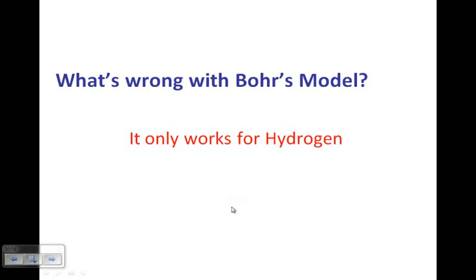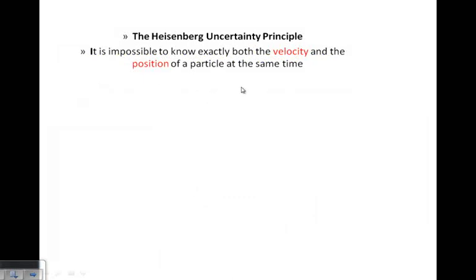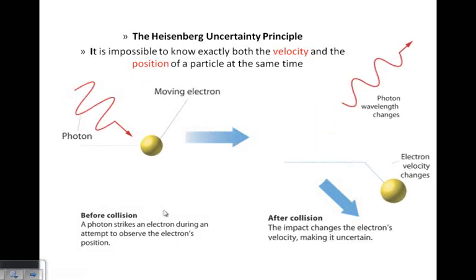Today we believe in something called the quantum mechanical model, also known as the electron cloud model. The people associated with it are Erwin Schrödinger and Werner Heisenberg. Heisenberg is credited with the uncertainty principle. He said you cannot know exactly the location and the speed of an electron, so all you can know is the likelihood of where you would find it - the probability. Schrödinger put together these complex mathematical equations to solve for the likelihood of where electrons would be located. The Heisenberg uncertainty principle says it is impossible to know exactly both the velocity and position of a particle at the same time.